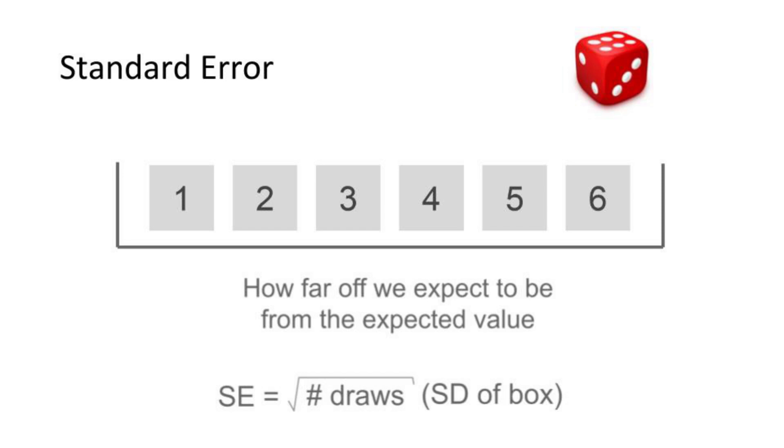And just like how expected value accounted for the number of die rolls or the number of draws from the box, standard error also accounts for the number of iterations your random variable has.